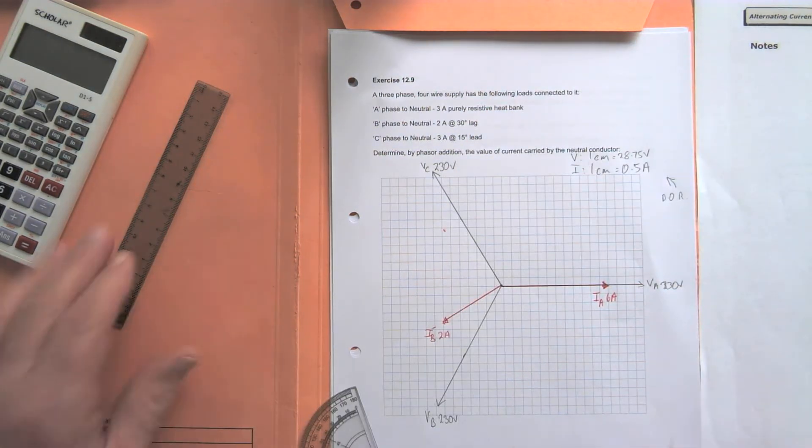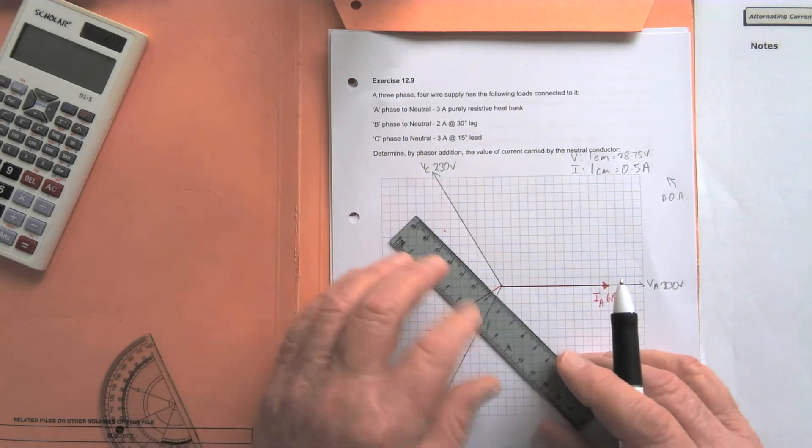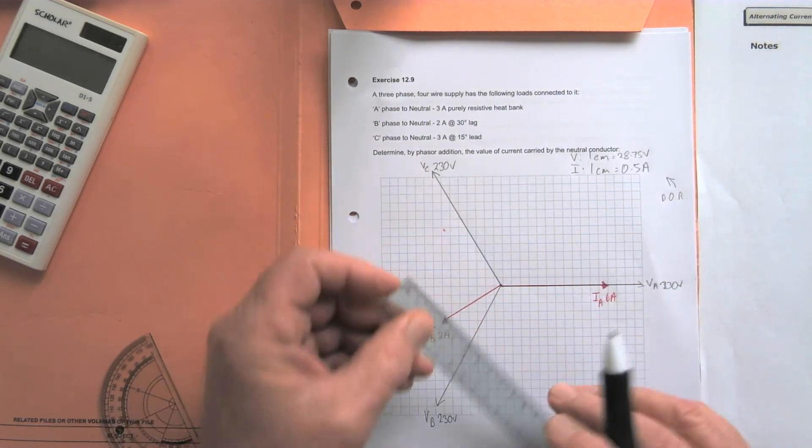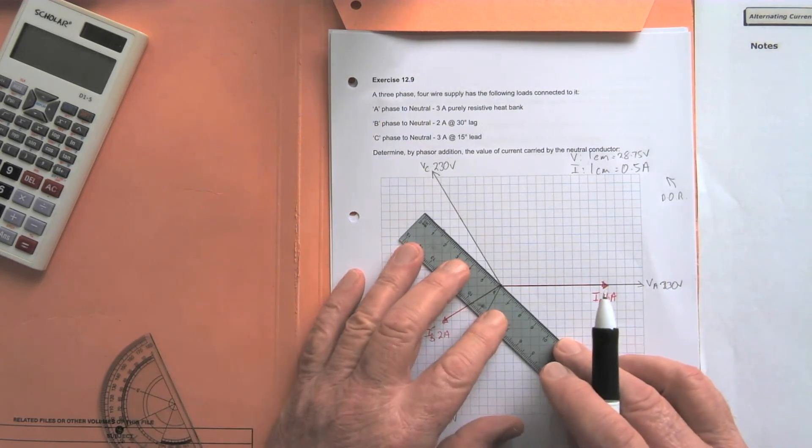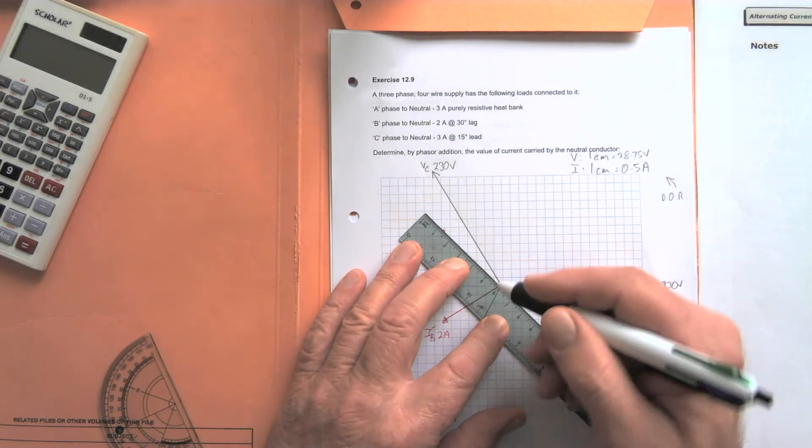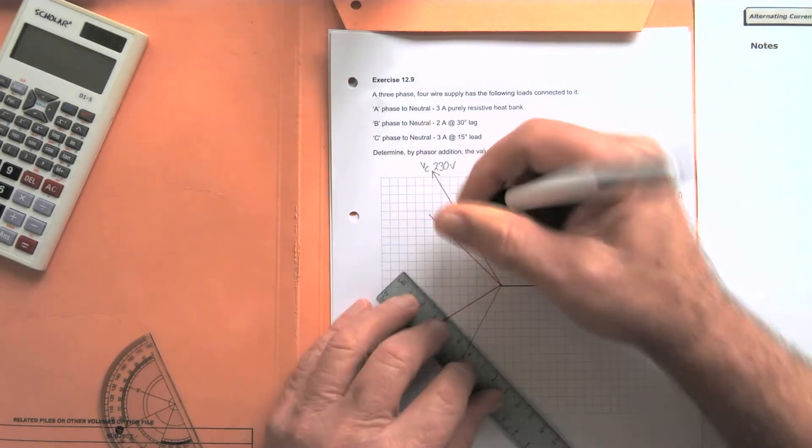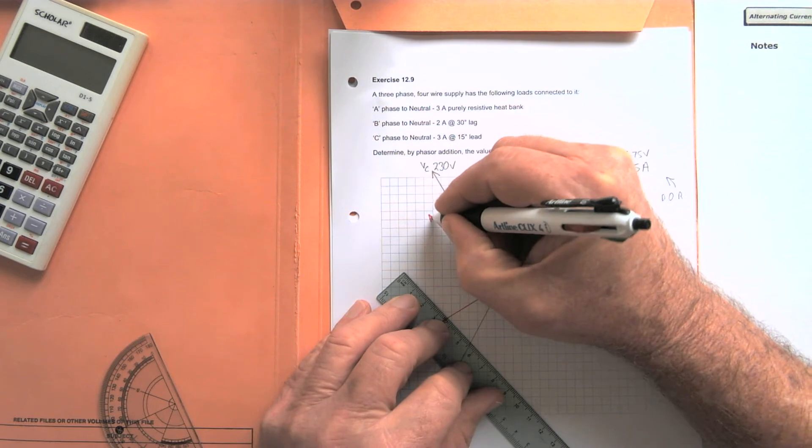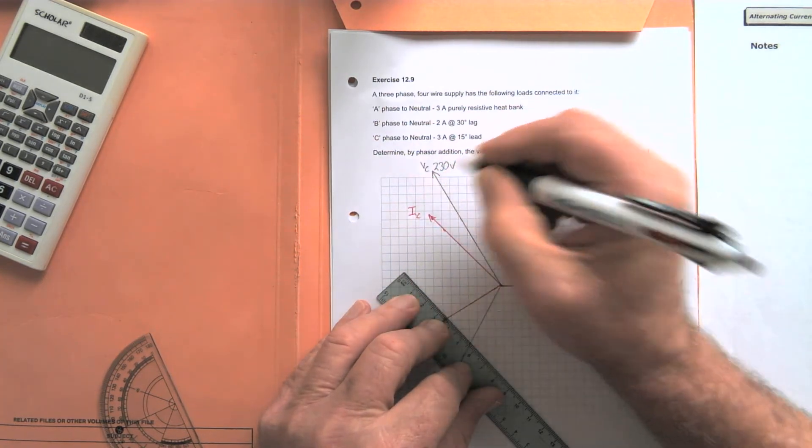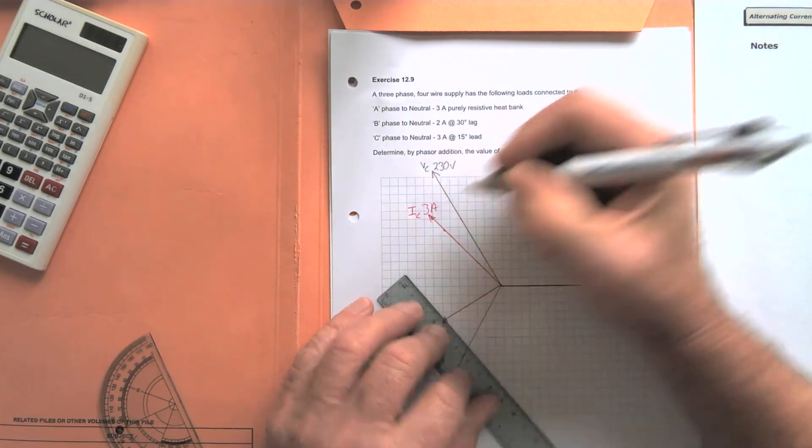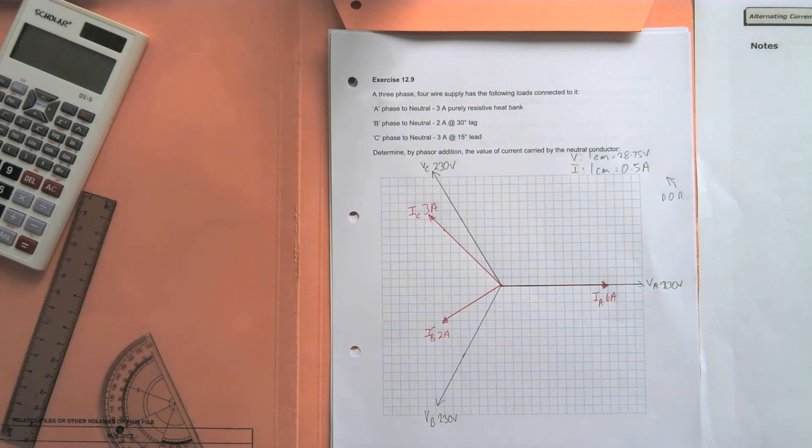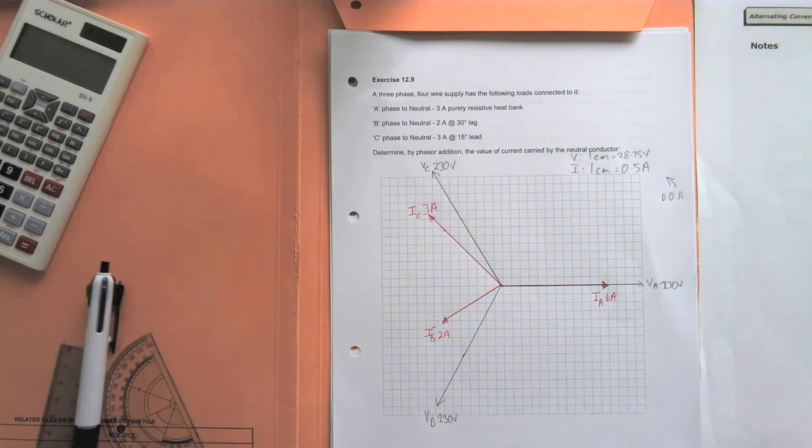So we plot in our three amps, or six centimeter long C phase current. So IC at three amps. So there's our three currents in our four-wire system.